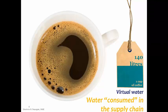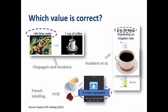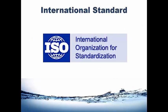As awareness was raised, different methodologies emerged. The same cup of coffee could be assessed in different ways: Humbert and Aal assessed a volume of 4 to 29 liters of water consumed depending on irrigation rate, not including pollution aspects. Another methodology from French labeling put forward 0.3 liters equivalent, where water scarcity was taken into account. With all these different values coming up, there was a need for consensus and harmonization — and who better to work on harmonization than the International Standards Organization, ISO.